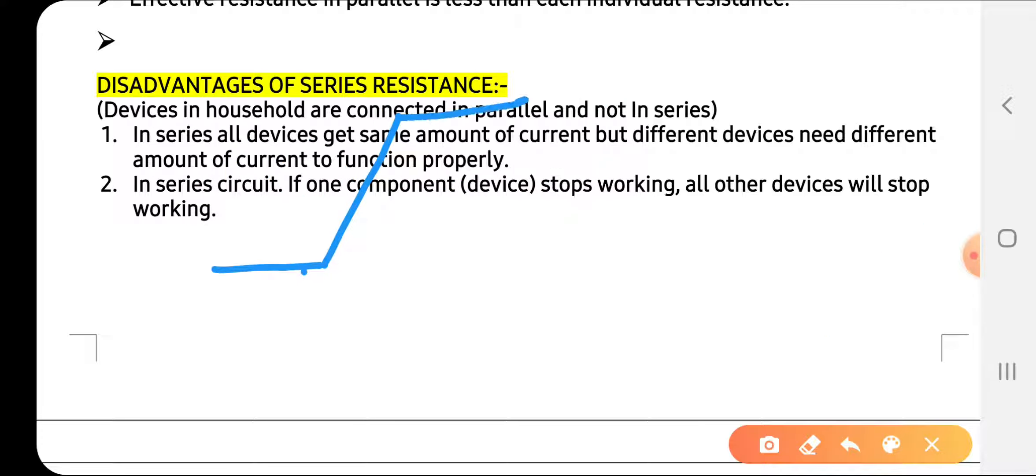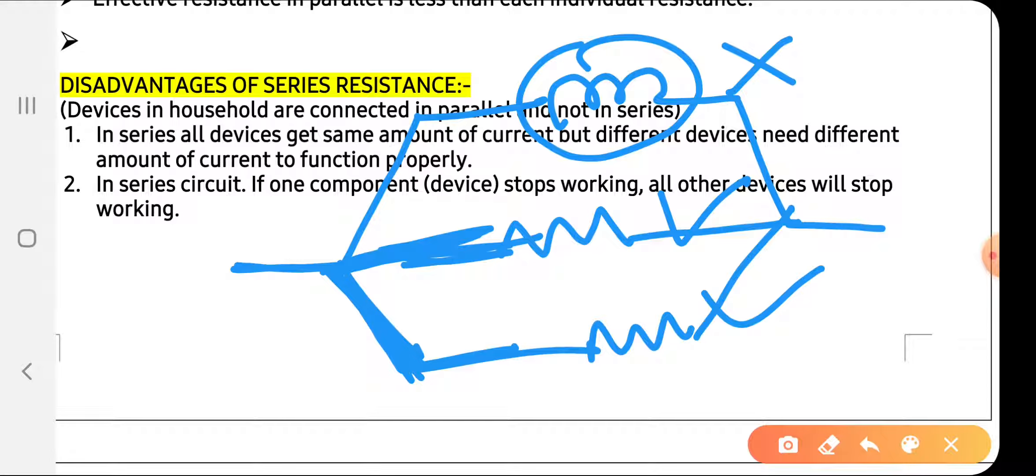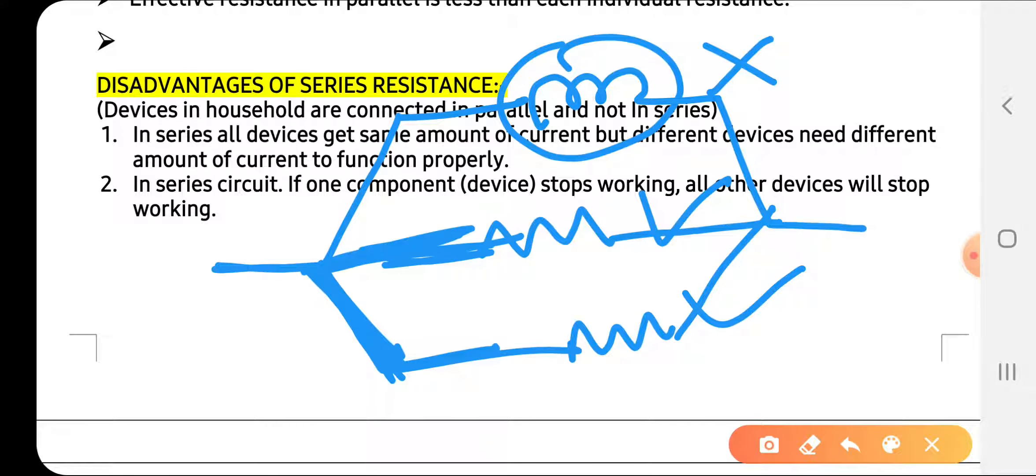We use parallel combination like this: bulb is connected, resistor or heater is connected. If the bulb fails, current will still flow through the other devices. This is how we use electricity in our houses also - we use parallel combination in our houses.